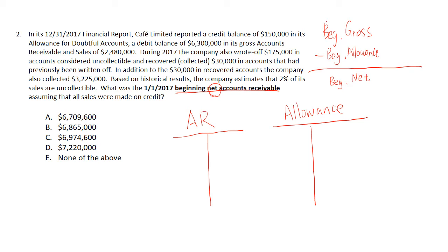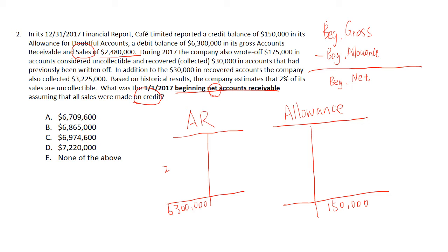Let's work through the problem. We have the beginning balances for both accounts: allowance is $150,000 and accounts receivable is $6.3 million. The company's sales are $2.48 million. Since we assume all sales are on credit, we debit accounts receivable and credit sales for $2.48 million.